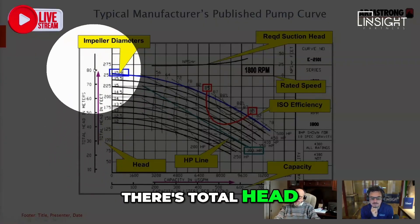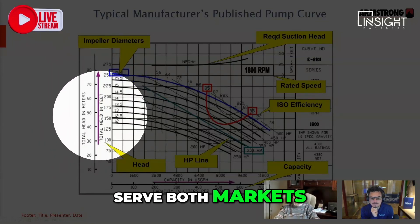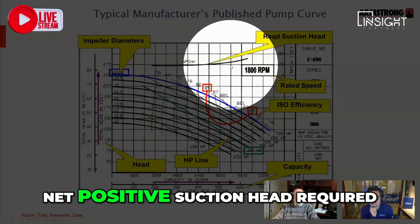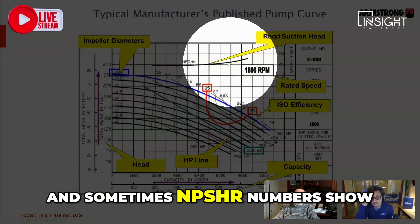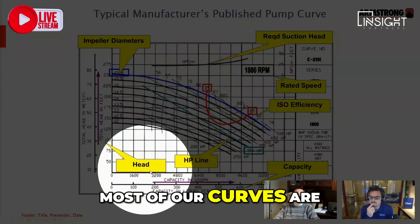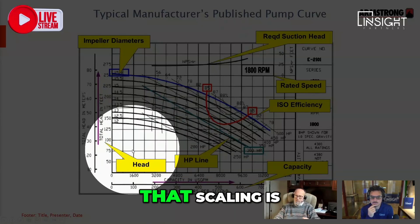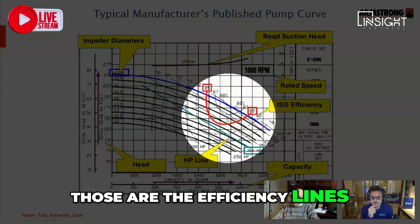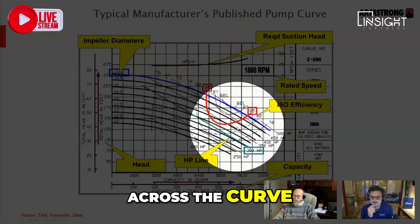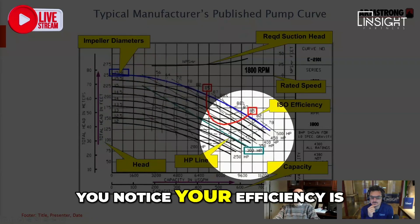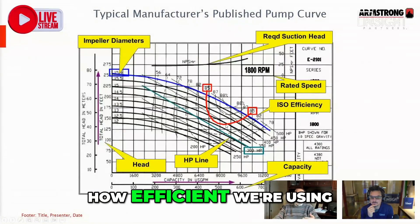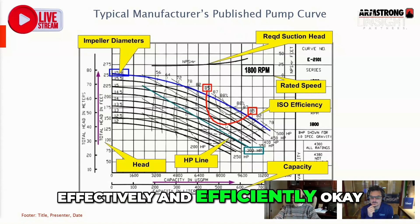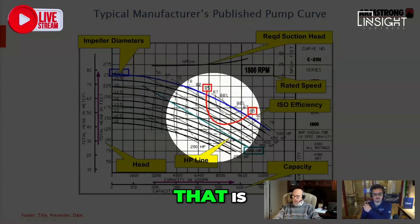Nothing's changed. There's total head in both feet and meters because we've got to serve both markets. There's our headline, there's our impeller diameters. We have another line on here called NPSHR, which is net positive suction head required. Sometimes NPSHR numbers show up at the top, sometimes they're down at the bottom. Most of our curves they're down at the bottom, and there's a chart that'll tell you what that scaling is. Then the next thing you see is these isobaric lines on the curve — those are the efficiency lines. As you move back and forth across the curve with different impeller sizes, you notice your efficiency is moving around — that's how efficiently we're using the motor power. And then this last line here, this green line, that is our motor horsepower line.